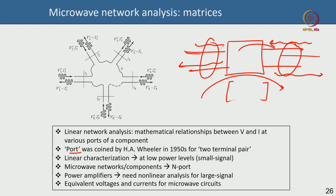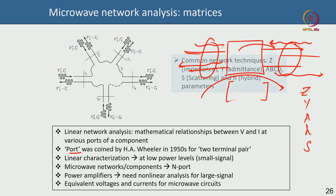For a transistor with two ports, matrices establish the relationship between input and output. There are several types: Z matrix (impedance), Y matrix (admittance), ABCD matrix (useful for cascading networks), S matrix (scattering — very important), and H matrix (hybrid). Typically these five types of matrices are used to relate input and output, though there could be more.